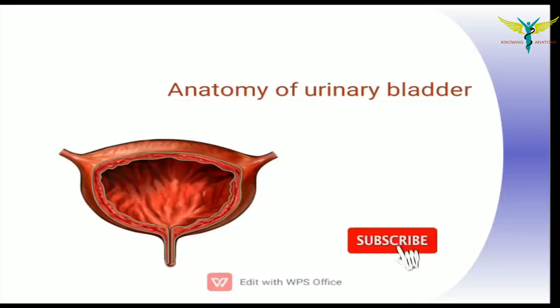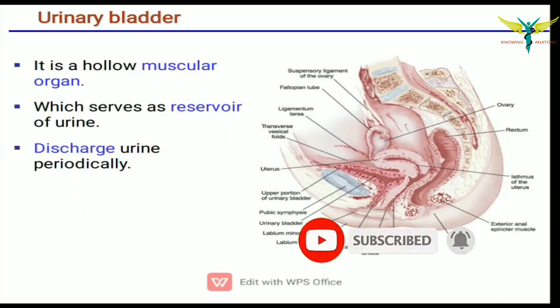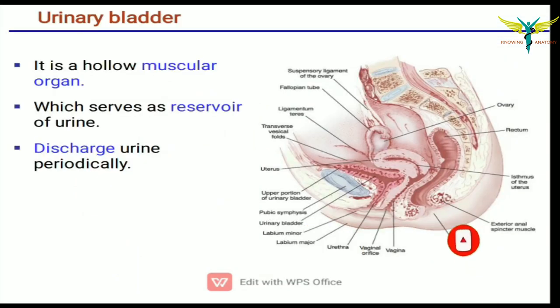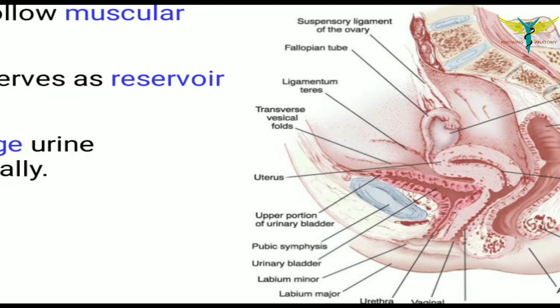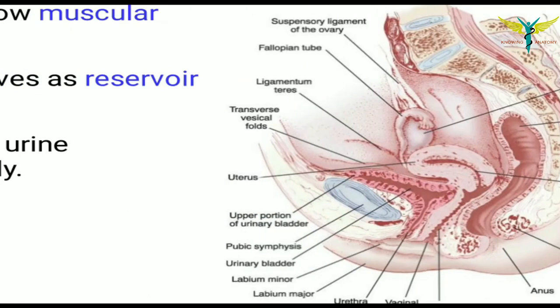In this video, let's learn about the anatomy of the urinary bladder. The urinary bladder is a hollow muscular organ and it serves as a reservoir of urine. It discharges the urine periodically.